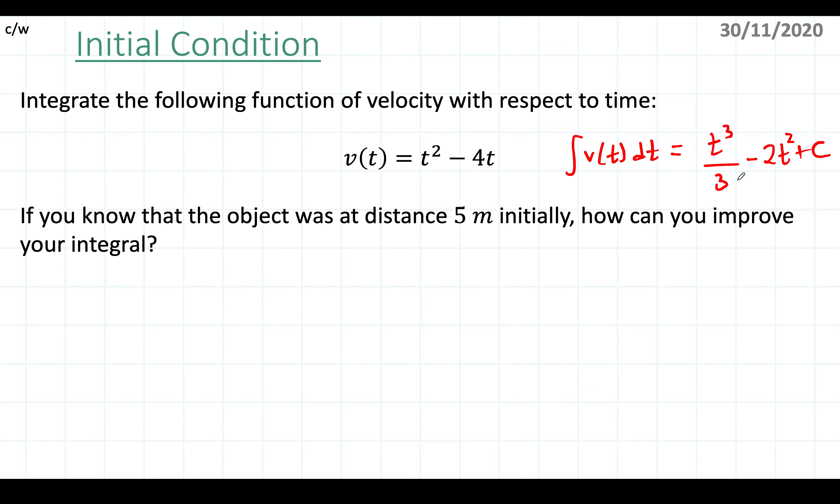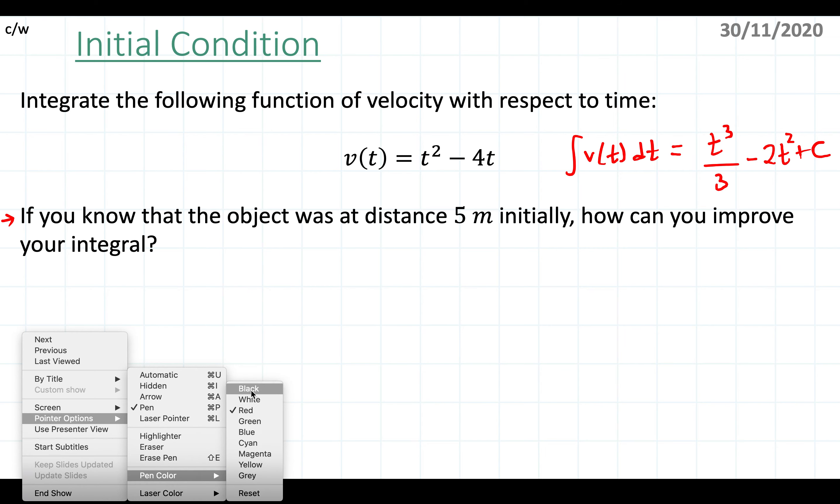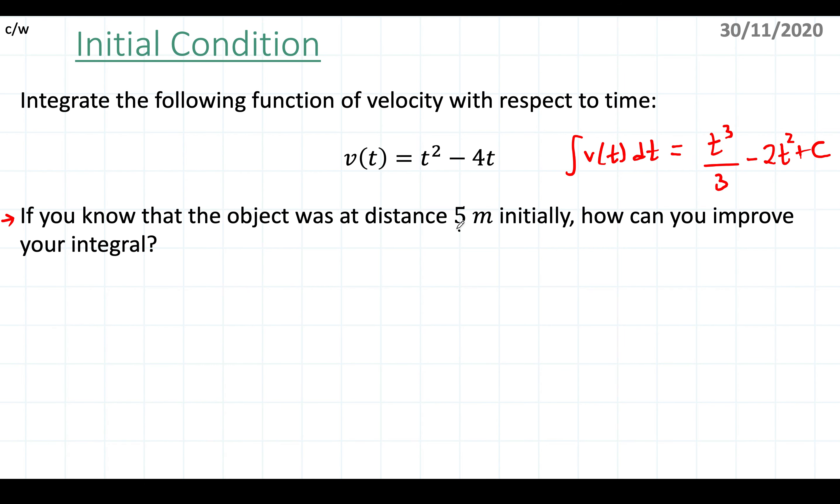Now I want to eliminate this plus c. So if I know this extra information—I know that the object was a distance 5 meters initially—how can I improve my integral? The way you'd want to improve your integral is by using this piece of information. We know that the distance is 5 meters initially. Now how does that help?